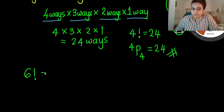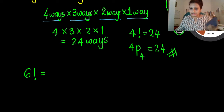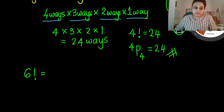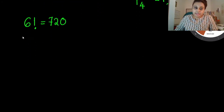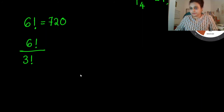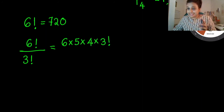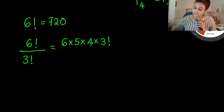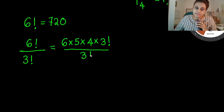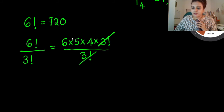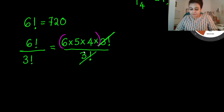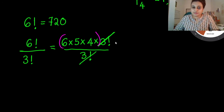For example, six factorial equals 720 — you can key that straight into your calculator. Now if teacher gives you six factorial over three factorial, what you can do is write it as six times five times four times three factorial, then divide by three factorial. The three factorials cancel out. So you are left with six times five times four, which equals 120.